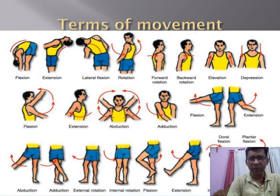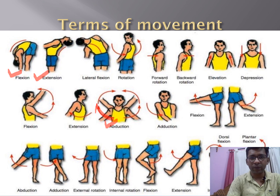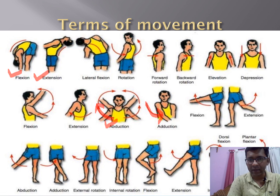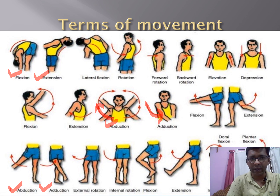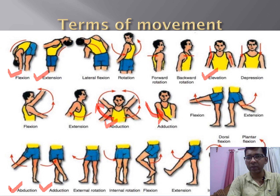These are the terms of movement of the body. Flexion is the body bending forward, and extension is bending backwards. Abduction is when an arm or leg moves away from the body, while adduction is when the extremities come towards the body or towards the midline. Elevation is bringing the shoulder above, and depression is bringing the shoulder below.